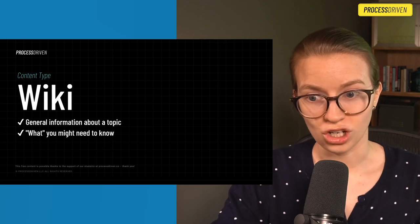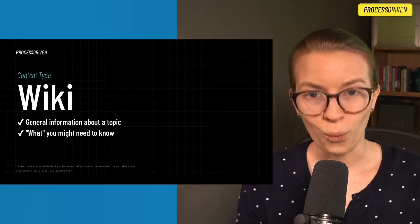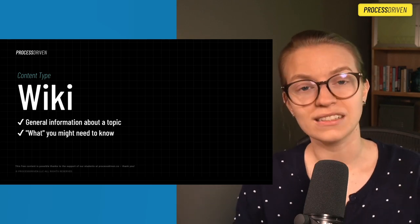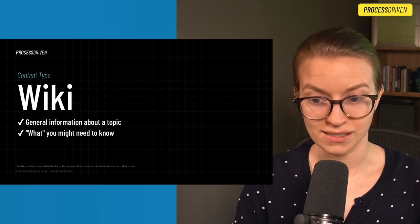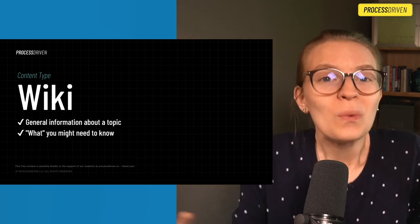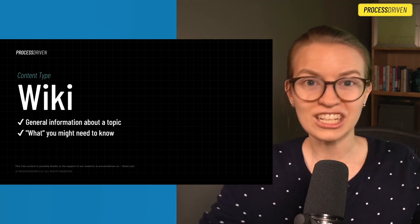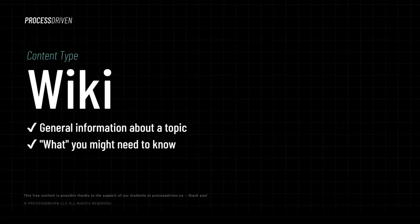I'm going to go through what each of these terms means, at least as I understand them. If you guys disagree or have your own amendments to these definitions, I would love to hear — just drop them in the comments below. Let's dive in and start with the word wiki. Wiki is a type of content used for documenting a business system. With a wiki, generally there's no real purpose to it — it's kind of like a collection of random knowledge, much like Wikipedia.